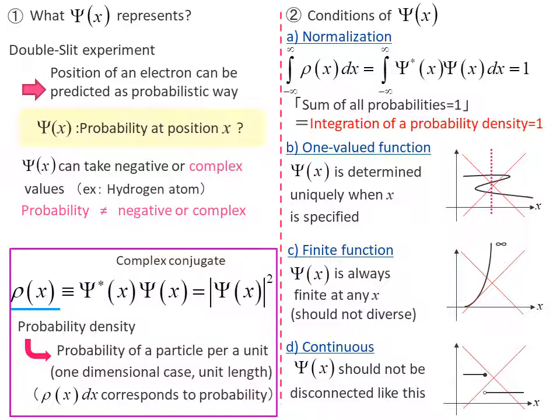Given that the square of the norm of this wave function is the probability density, I would like to explain the four conditions that the wave function should satisfy.